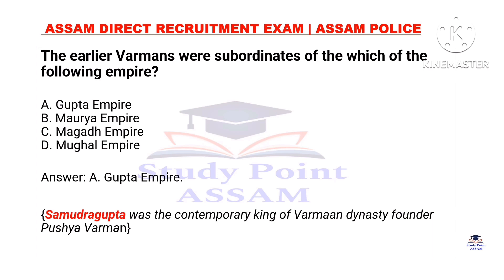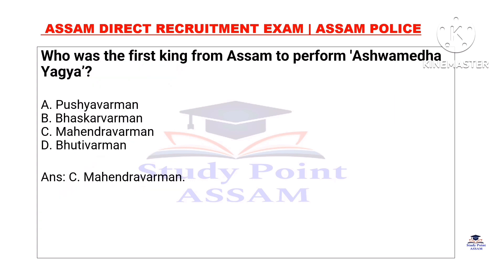The earlier Brahmans were the subordinates of the following empire. They were the first kings of Assam to perform duties at the time of Assam. This is Mahindra Brahman. We will discuss the concept of the first king of Kamarupa. This kingdom was extended in the first time. The first king of Kamarupa extended the kingdom, and the second king of Kamarupa further extended it.